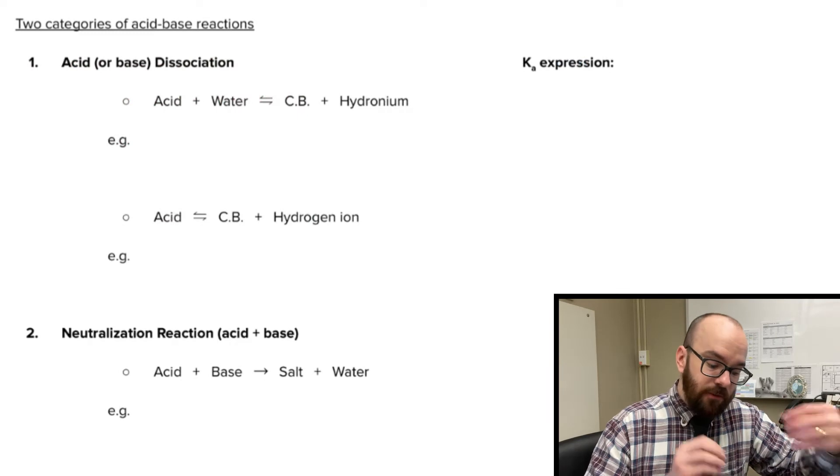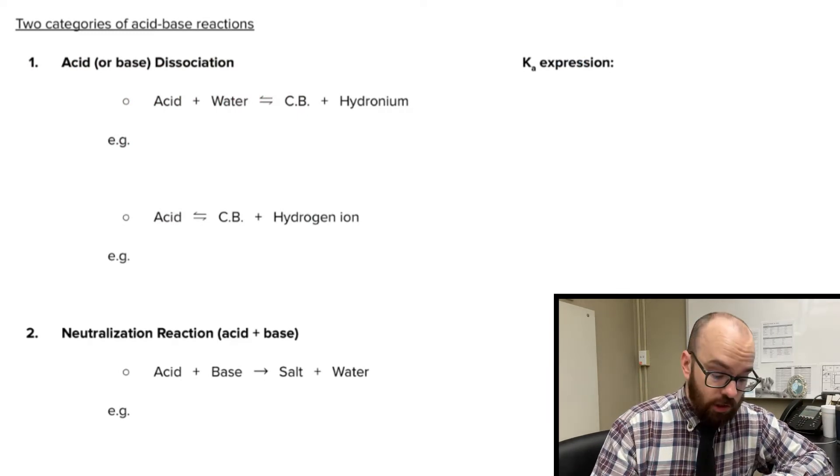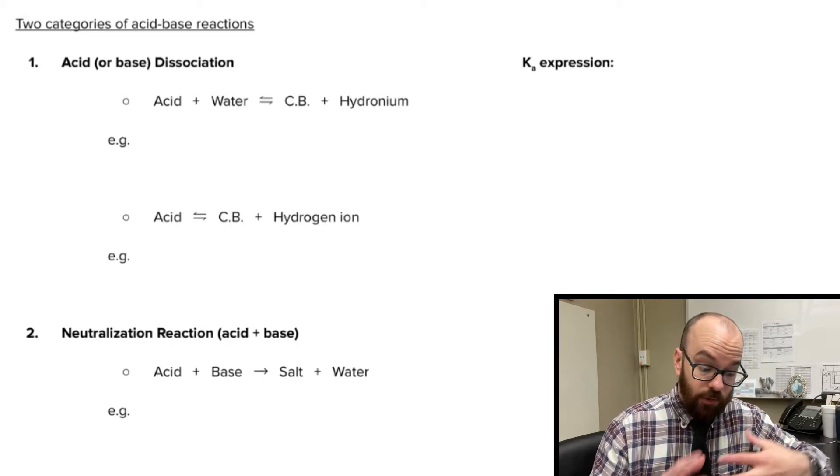Next let's look at the two types of reactions that we can write for acids and bases. One of those is a dissociation reaction, and the other is a neutralization reaction. Let's start with dissociation reactions and talk about what they are.